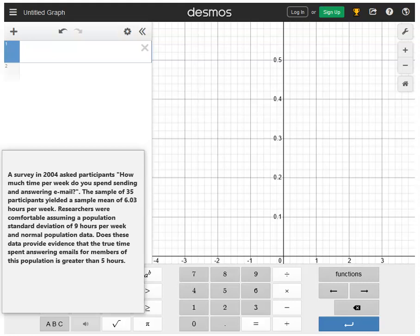Alright, so in this video I'm going to show you how to use Desmos to find a p-value for a one-sample z-test for a population mean. I just grabbed a pretty generic textbook-style problem. I wanted to focus on essentially what you're looking for in the problem.